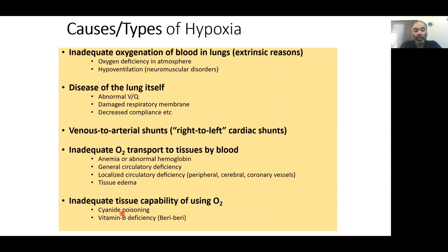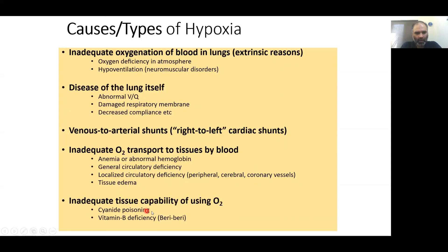In cyanide poisoning, you will have a normal PO2 in the blood, yet the physical symptoms of hypoxia will be present in the patient. Hypoxic hypoxia is when there is an atmospheric issue. Cytotoxic hypoxia is when there is an inability of the tissue to use oxygen — cyanide poisoning is an example. Anemic hypoxia is when it is due to anemia, and so on.